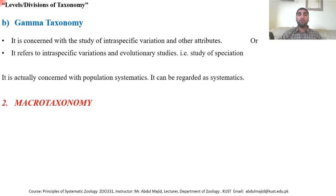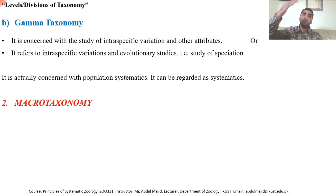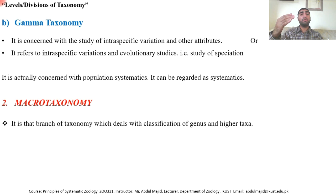The second major division is macro taxonomy. In macro taxonomy we study upper levels — from subspecies and species we go up to genus, family, order, class, phylum, kingdom, and domain. When we are studying at genus level or above, this is called macro taxonomy. It is the branch of taxonomy that deals with the classification of genus and higher taxa, whereas in micro taxonomy we study species and subspecies.